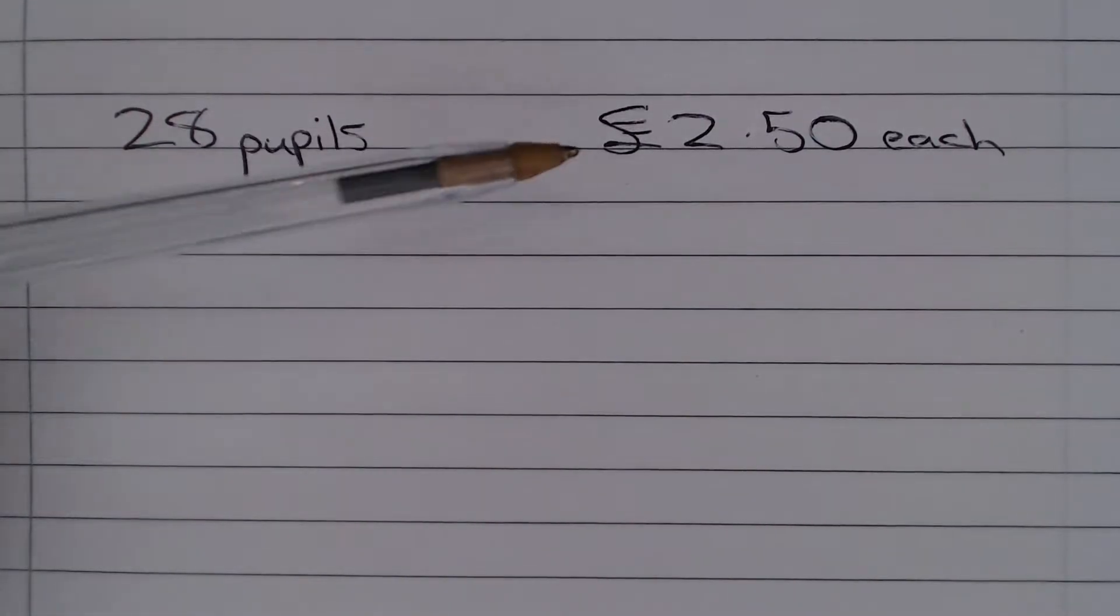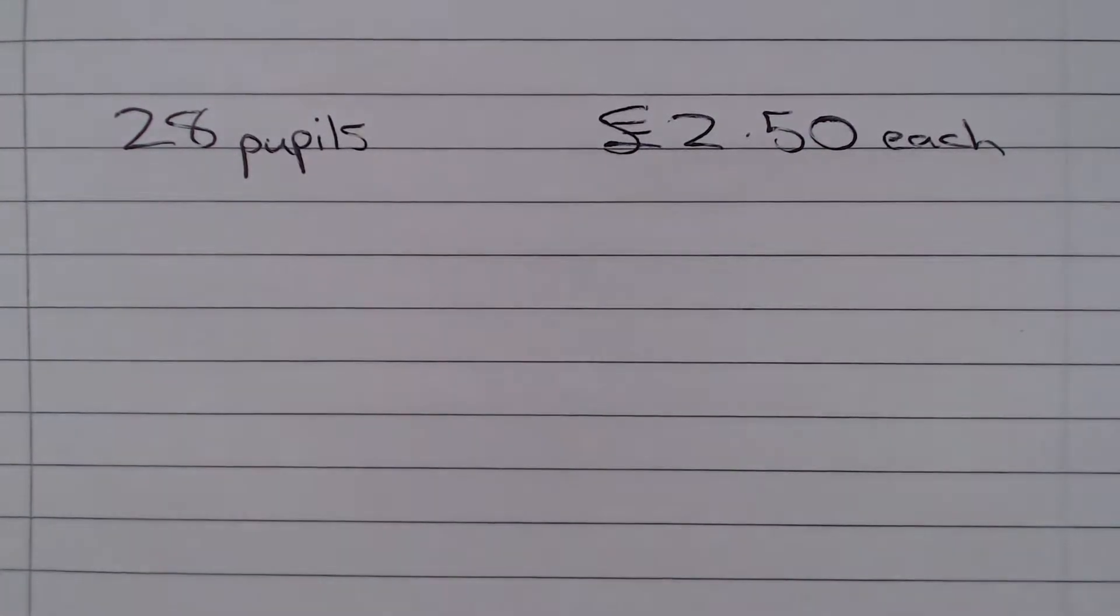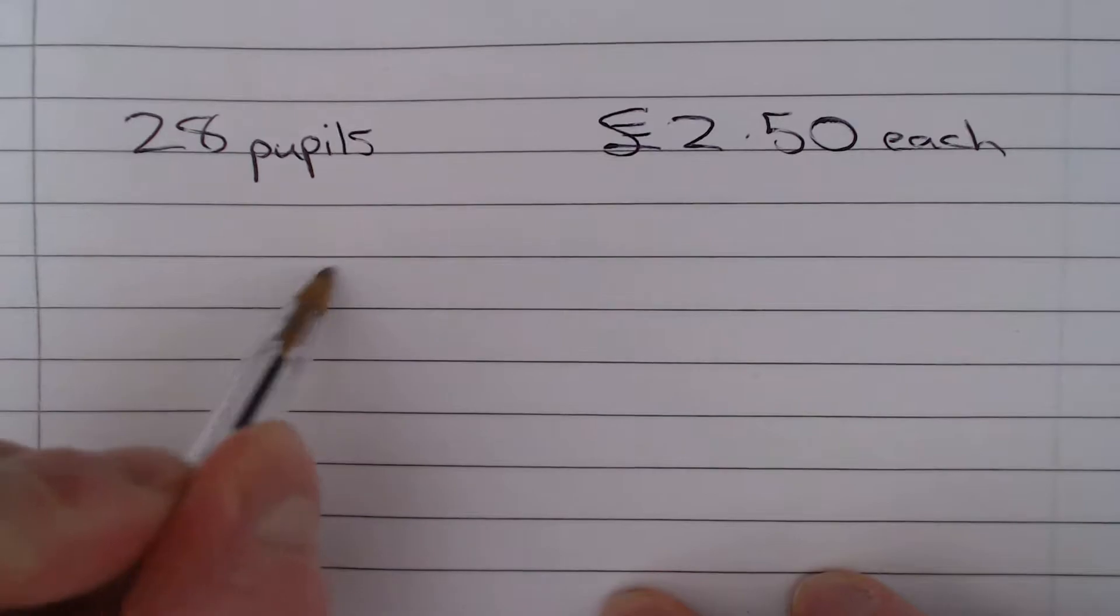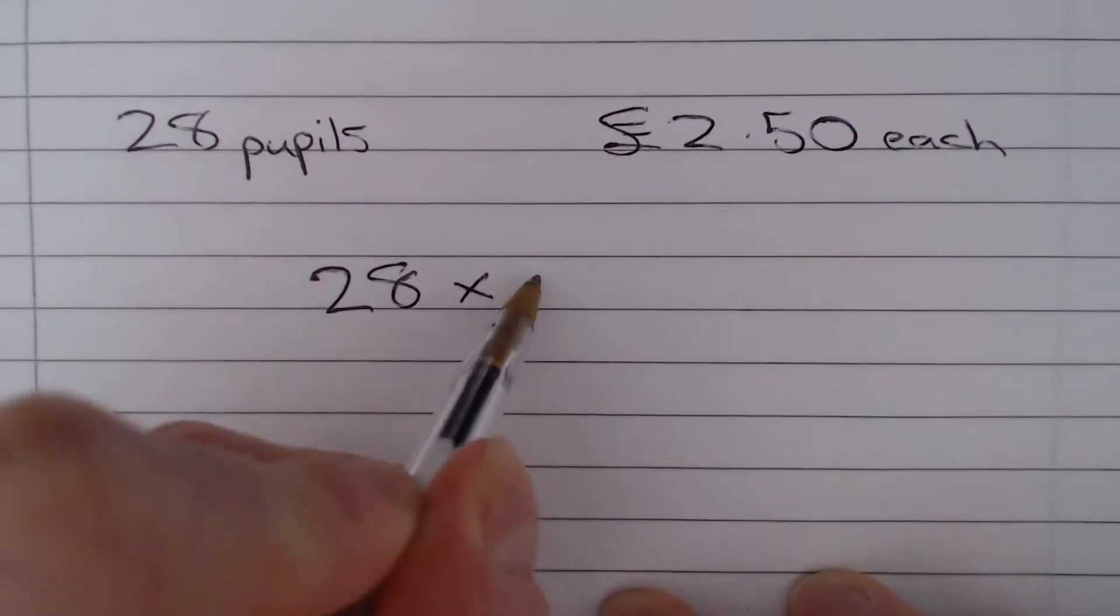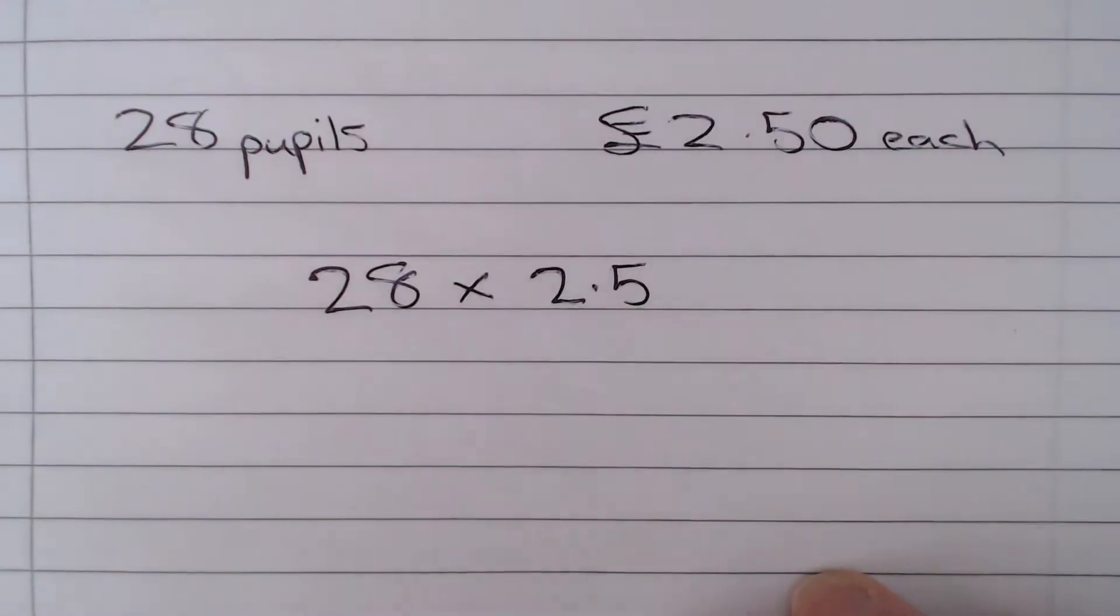Well, if 28 pupils each spent £2.50 on the photograph, then in total they spent 28 multiplied by £2.50 or 2.5.